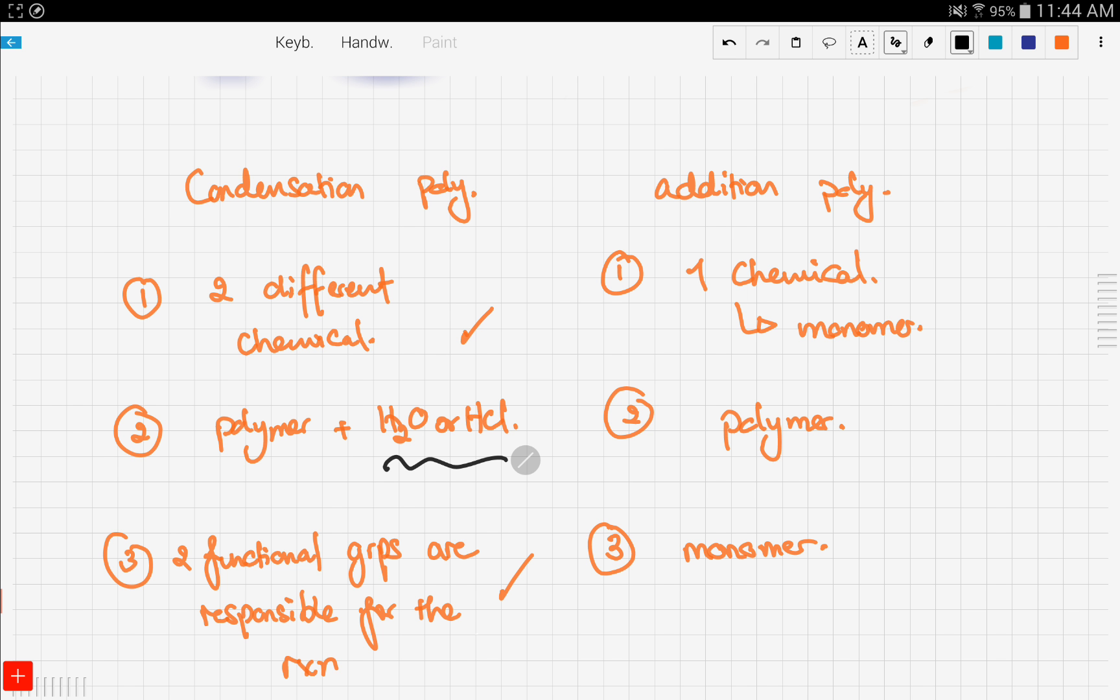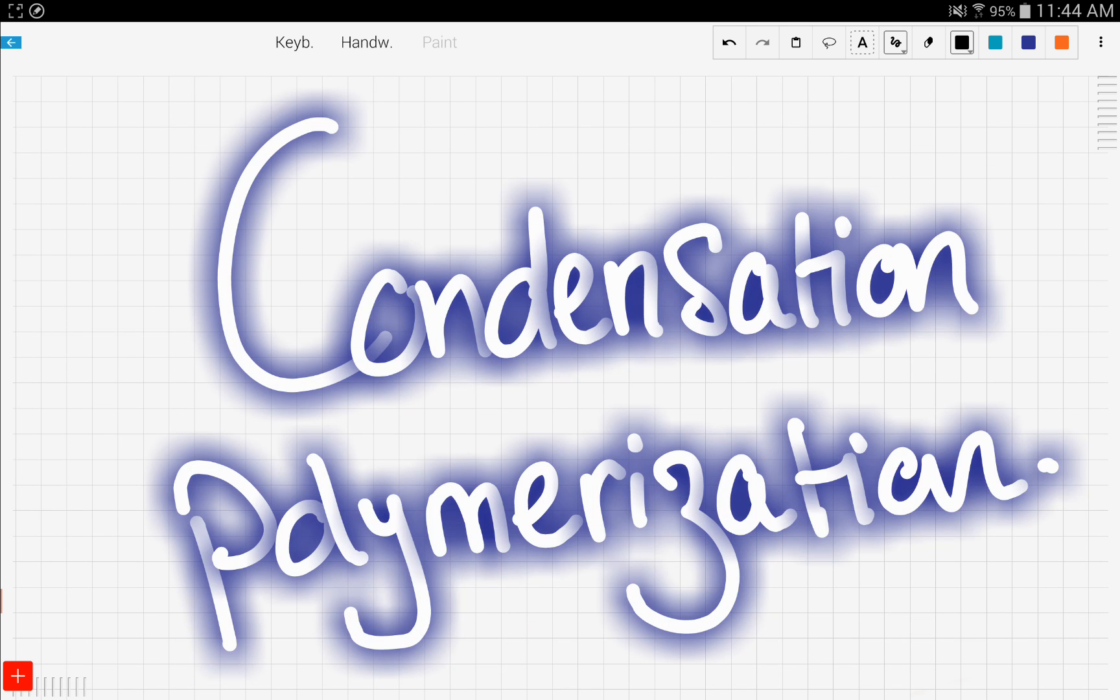Unlike addition polymerization, it's called addition because we add different monomers to form the polymer. So that's it for the introduction to condensation polymerization. In the next video, we're going to talk about some of the condensation polymerization, some of the compounds that are formed using this type of reaction. So stay tuned, and good luck! Thank you.